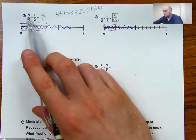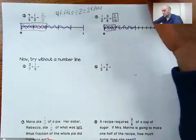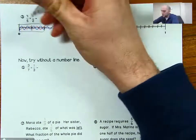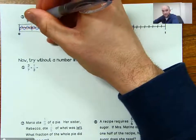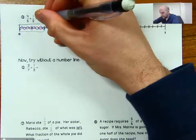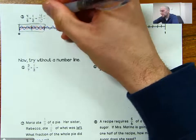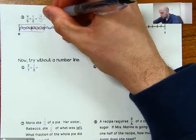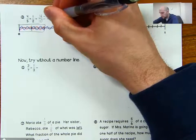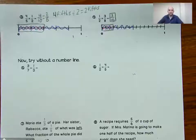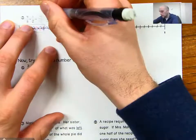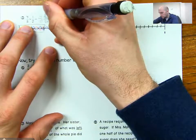The same applies here. Four times one is four, and five times two is ten, giving four-tenths. But four-tenths, if I divide four by two and divide ten by two, I end up with two-fifths — that's the equivalent of four-tenths. So sometimes I'll have to simplify my fraction afterward to get the same answer.